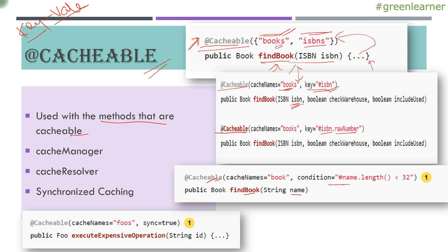There is also an option for synchronized caching. This becomes useful when you have the same cache being used on different methods and they are called simultaneously, causing the same cache evaluation to happen at the same time. You can stop this by specifying the sync attribute as true, so cache adding, updating, and all those operations happen only one at a time. This lets you avoid conflicts and race conditions.